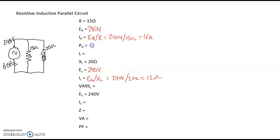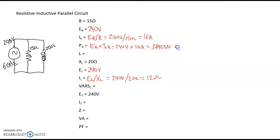We know the voltage across the resistor and the current through the resistor, so we can use the power formula to calculate the power dissipated at the resistor. That is the voltage across the resistor times the current through the resistor, which gives us 3,840 watts, or 3.84 kilowatts.